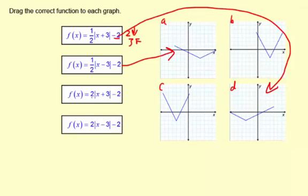This next one has a stretch by 2, so it's much steeper than your original absolute value graph. And the translation is 3 to the left and 2 down. 3 left and 2 down, that's this one here.